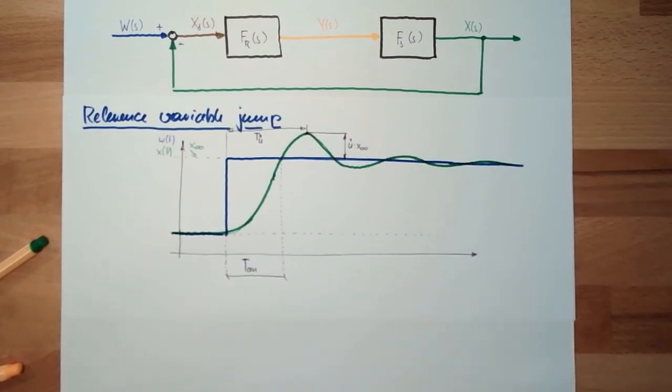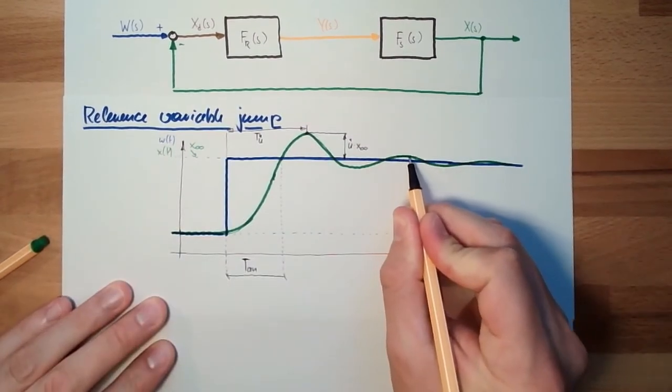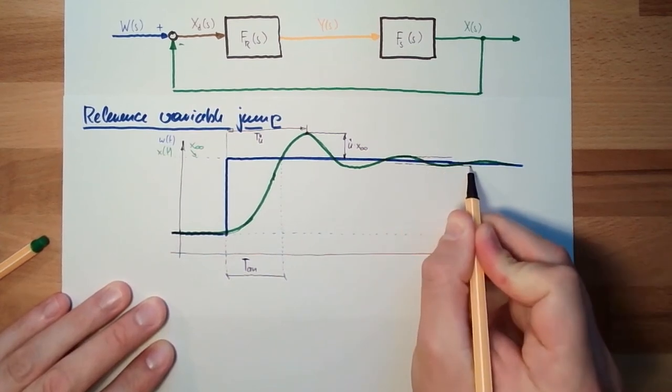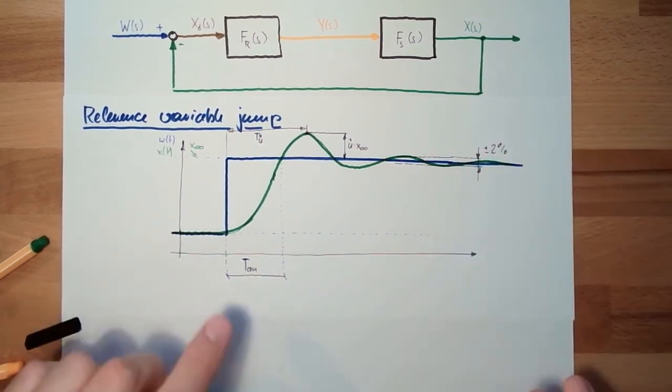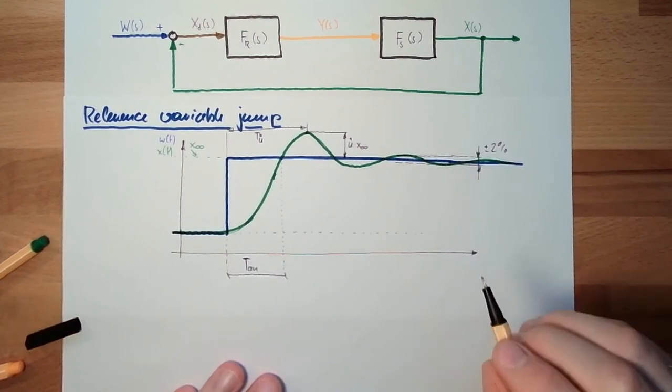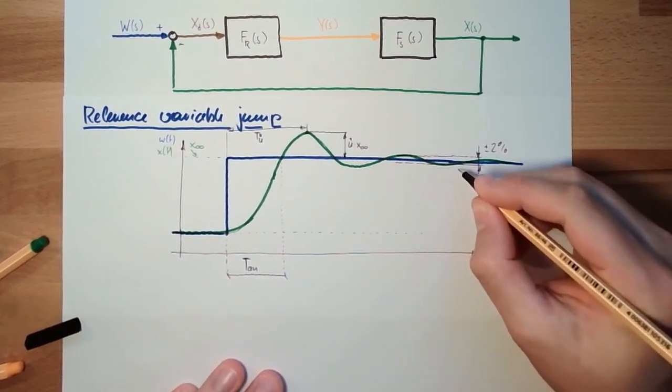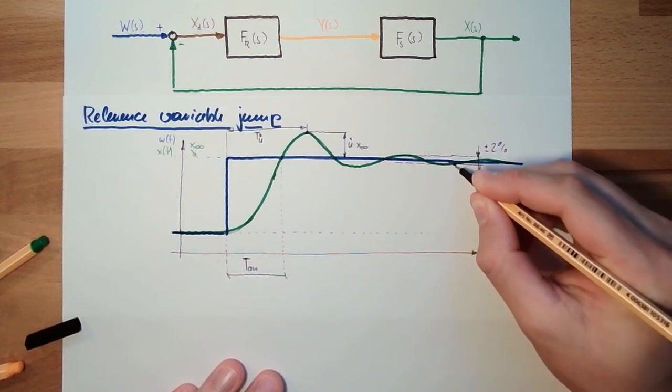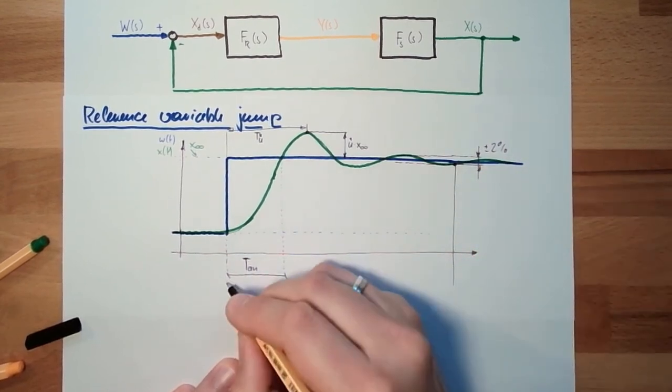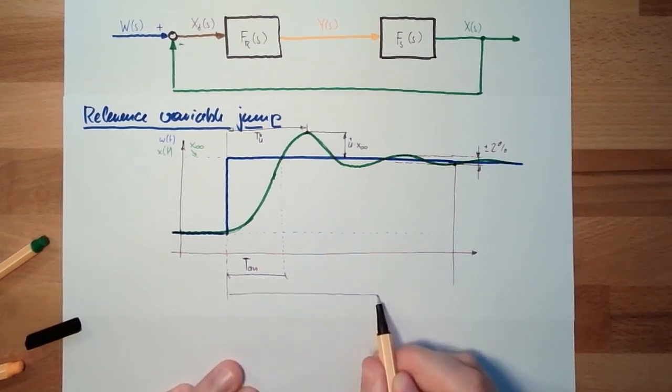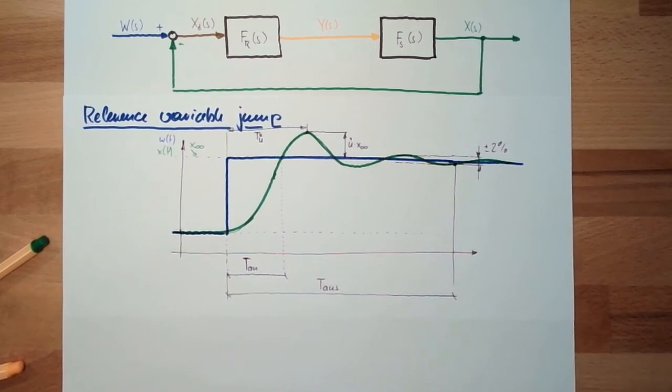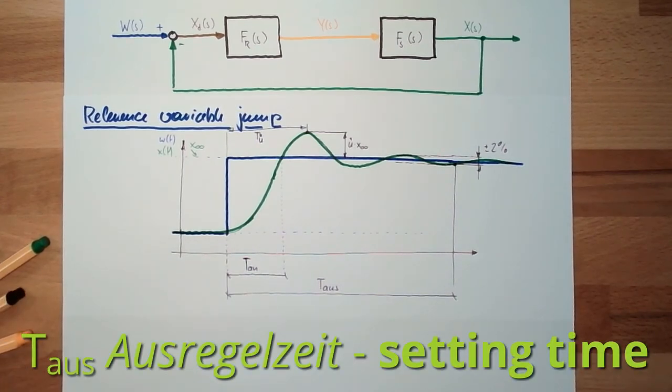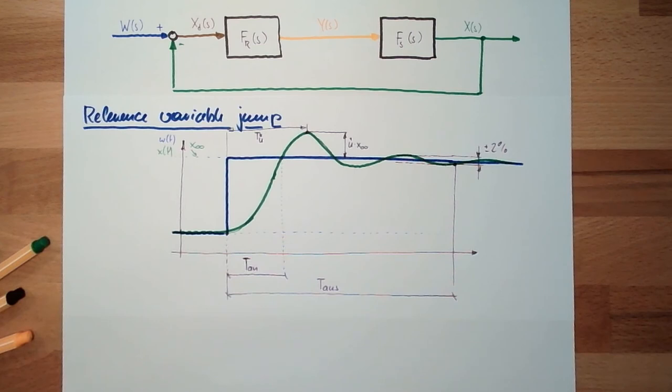And then there is somewhere a corridor, usually plus minus 2%. And if the controlled variable stays inside this plus minus 2%, which will happen at our example exactly here, this time from the beginning to this time, it's the control time or in German Ausregelzeit. Ausregelzeit, in English also settling time.